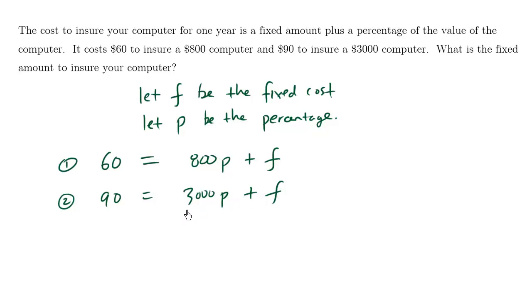Now we can use either substitution or elimination to solve for F, and in this case, I want to eliminate the P's by using elimination. The LCM of 800 and 3000 is some number, but I just want to make these both 24,000.